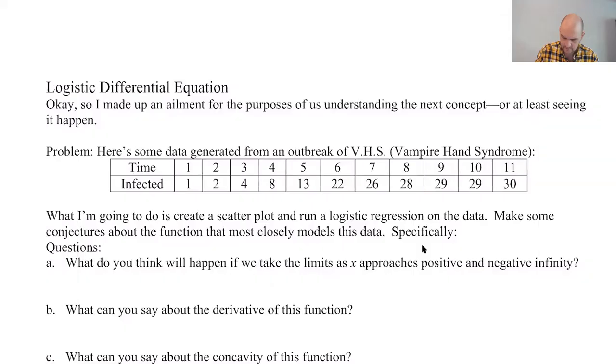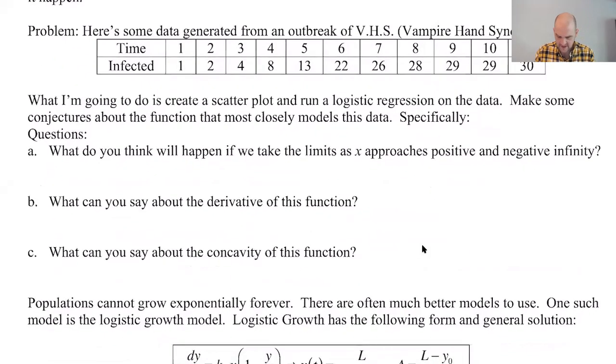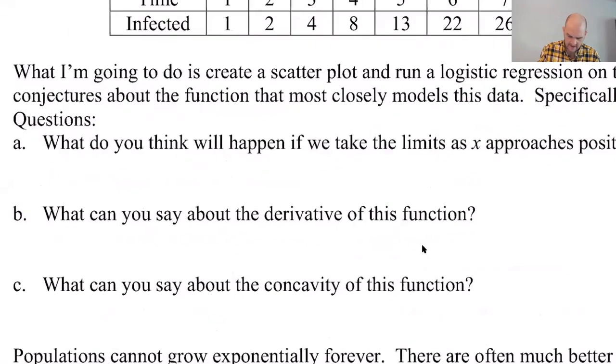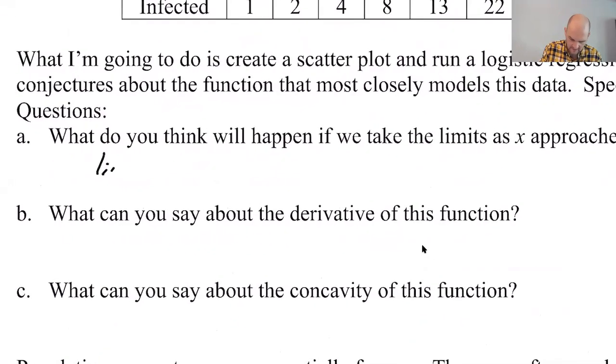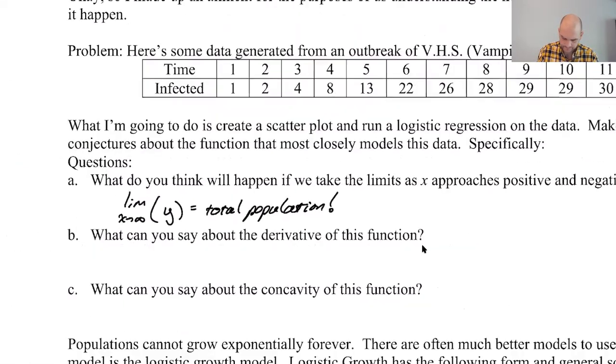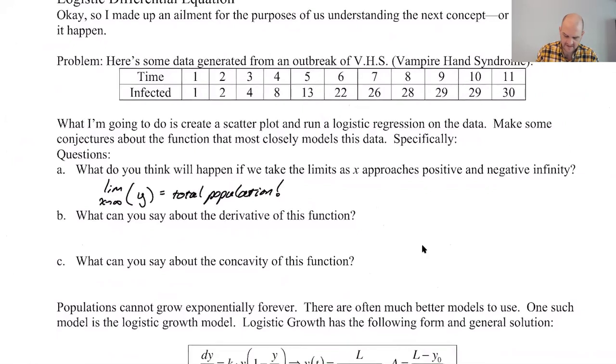So, what do I think will happen if we take the limit as x approaches positive and negative infinity? I think that the limit as x approaches positive infinity of y is going to be the total population. It looks like everybody eventually is going to get this thing. If you think about the activity that we did in the previous video, yeah, eventually everyone will. Theoretically could take an infinite number of rounds, but eventually everybody's getting it.